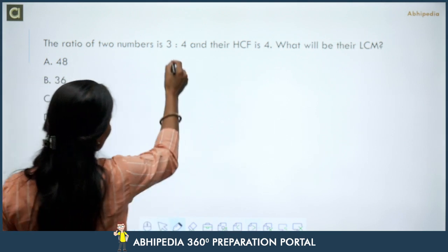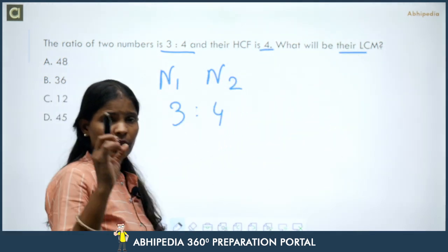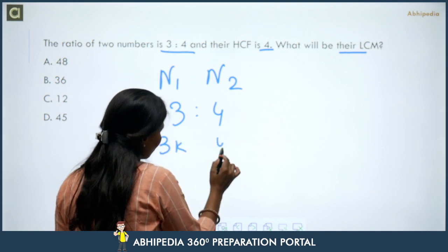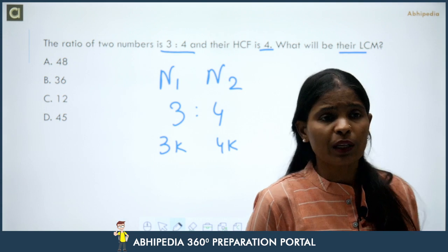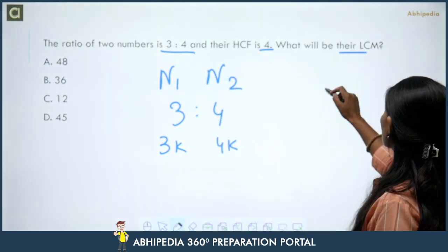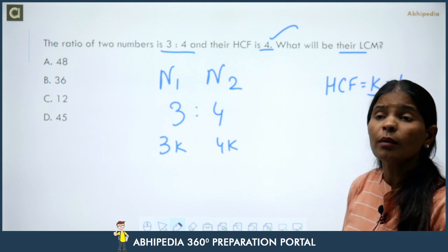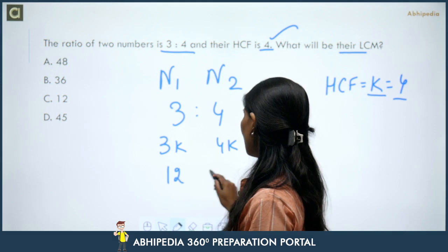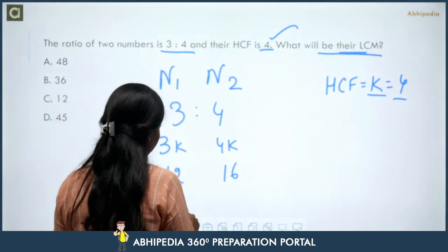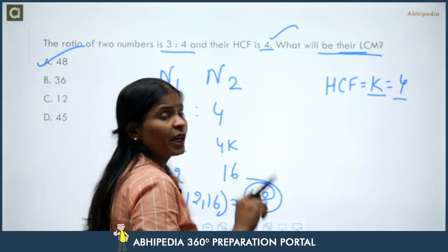Next question: the ratio of two numbers is 3:4 and their HCF is 4. Find their LCM. When numbers are given as a ratio, they are not exact values — a constant k is multiplied. The HCF always equals the constant k when numbers are in ratio form. Here HCF = 4 = k, so the numbers are 3×4 = 12 and 4×4 = 16. The LCM of 12 and 16 is 48. Answer: 48.